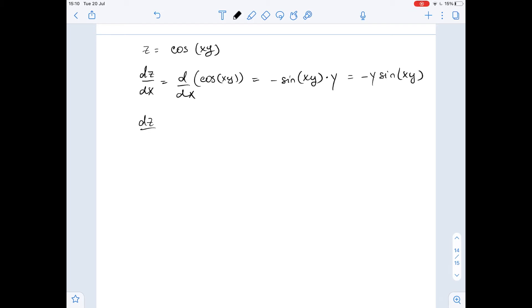Now let's find the derivative of z with respect to y. It equals the derivative of cosine of xy with respect to y, and it equals negative sine of xy times x. So it equals negative x times sine of xy.